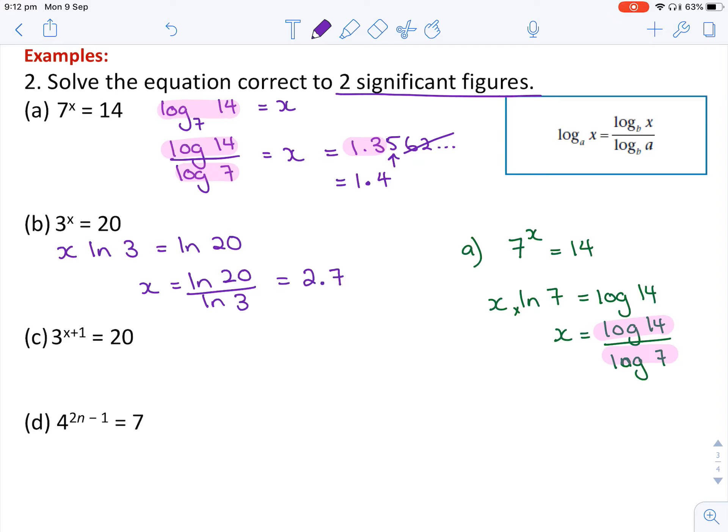Looking at part c, same thing. When we're logging both sides, the x plus 1 comes at the front. So I end up with x plus 1 as a component being multiplied by log 3 equals log 20. So x plus 1 is log 20 divided by log 3.